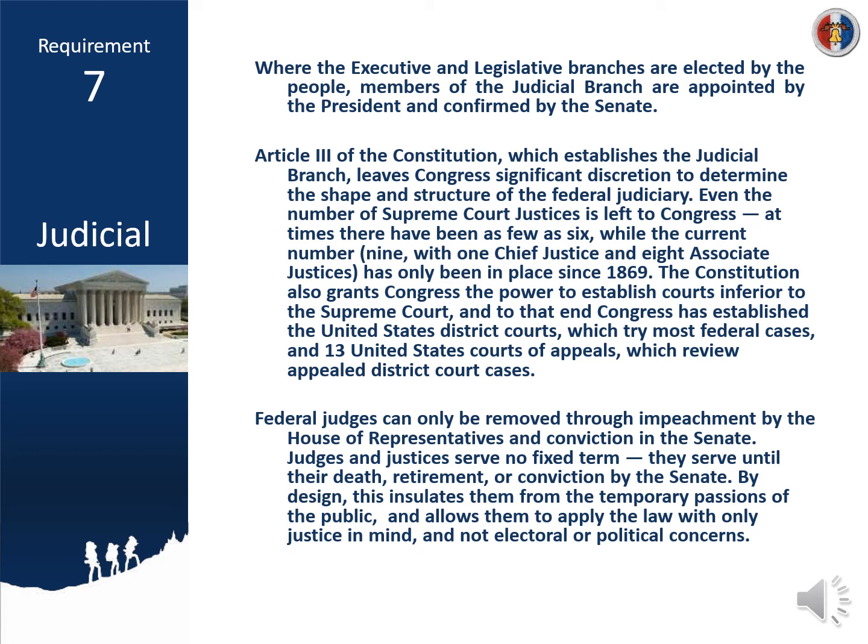Federal judges can only be removed by impeachment — that's where the check and balance of Congress comes in; they can impeach them to remove them. They can also verify the nomination. The president checks the court system by nominating them, but because they're in their positions for life, that's where they have a check on the other branches. The judicial branch can also declare laws unconstitutional. Because there are so many court cases, the Supreme Court can't hold them all, so we have Article Three courts — the courts of appeals and the circuit courts — which rule on laws before they get to the Supreme Court. Only when those courts are in conflict with one another, or a case is appealed, does it get to the Supreme Court.